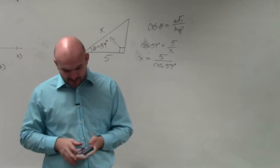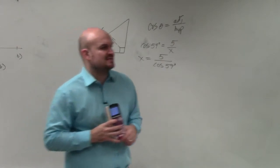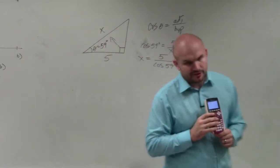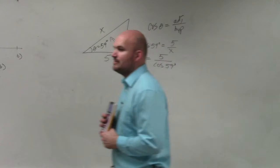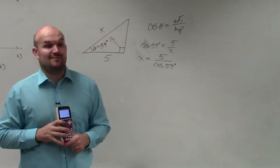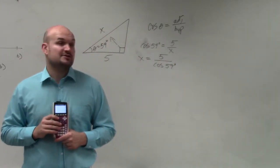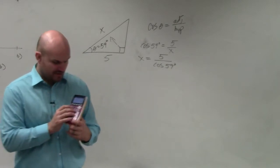In your graphing calculator, the main important thing you're going to want to do: if you have a scientific calculator or a graphing calculator, you're going to have a mode. You want to make sure that you are in degree mode. Whenever we're dealing with degrees, make sure you're in degree mode. Whenever we're doing radians, make sure you're in radian mode.